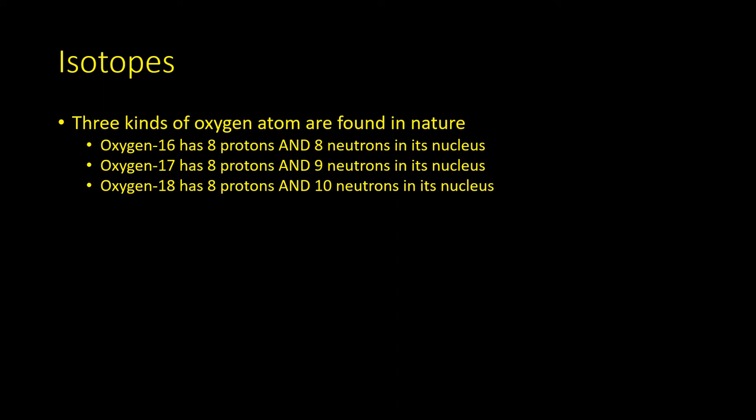If we take the example of oxygen, there are three kinds of oxygen atoms found in nature. Oxygen-16 has eight protons and eight neutrons in its nucleus, but there's also oxygen-17 and oxygen-18.